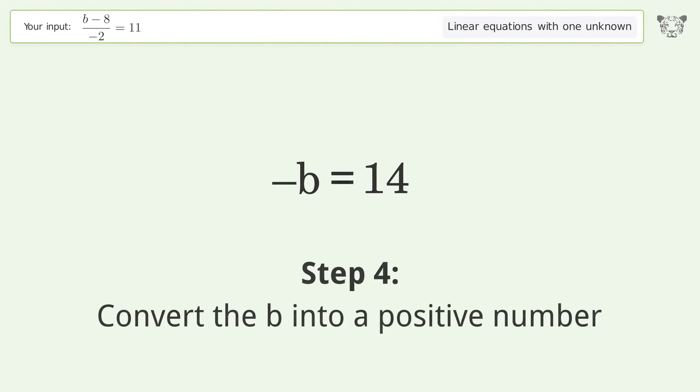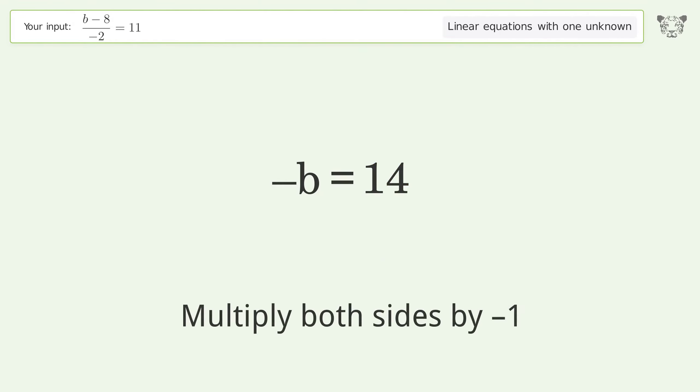Convert the b into a positive number. Multiply both sides by negative 1. Remove the 1s. Simplify the arithmetic.